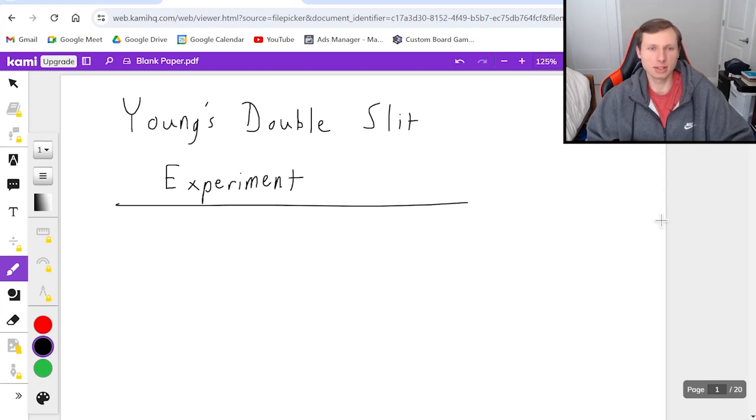Today we're going to be talking about Young's double slit experiment. This was an experiment done by Thomas Young in the early 1800s and his goal was to prove the wave nature of light.